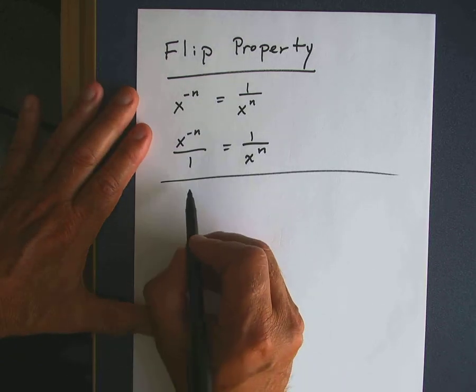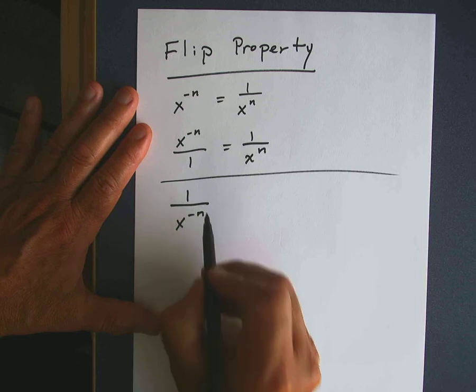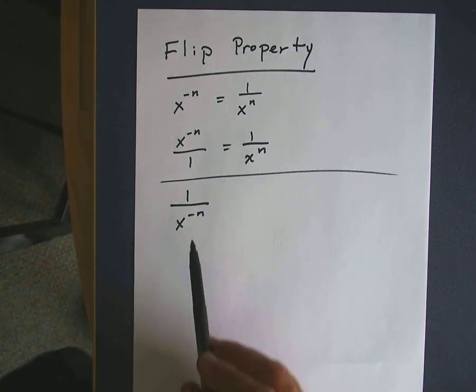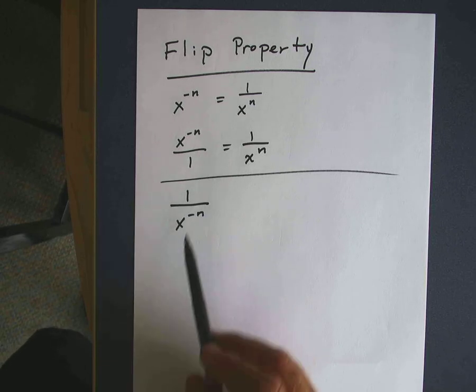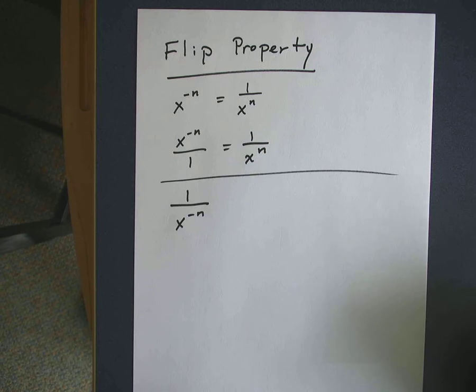You can also go the other way. So if you have, for example, let's take this, and again I'm going to prove it in general, some x raised to some negative power in the denominator, you can actually flip that to the numerator with a positive exponent. But let's prove that's the case.